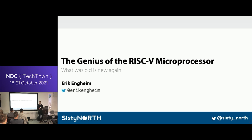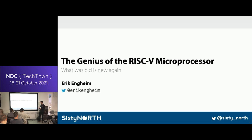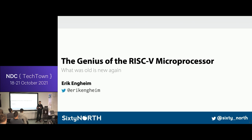My name is Erik Engheim. I work for a company called Sixty North — we do consulting work. What I normally do is create educational content for a programming language called Julia, which is a new language for machine learning, data science, and high-performance computing. That's a bit different from what I'm going to be talking about here, which is more of a hobby interest of mine. I started programming assembly code on the Motorola 68000 back in the late 1980s on the Amiga 1000. I've tried different architectures, and I think RISC-V is a quite exciting new architecture to work on.